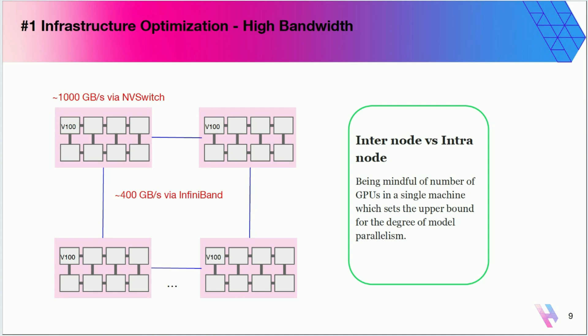The very first infrastructure optimization is high bandwidth, which is the most foundational thing needed to train large language models. In this diagram, each pink box is a VM — a normal compute engine or EC2 instance — and within these VMs, the gray boxes are GPUs; in this case V100s. I have four different VMs each having eight V100 GPUs. What I want to do is connect each of these GPUs with really high interconnect communication, something like NVLink and NVSwitch. Depending on the generation you're using, you can get roughly 1,000 GB/s or more of data transmission.